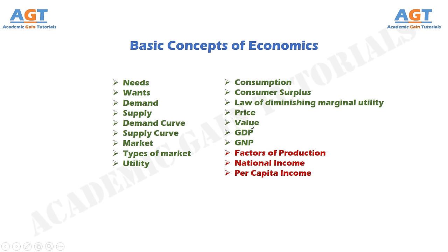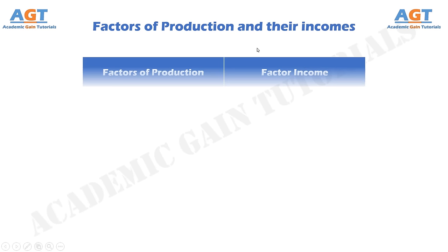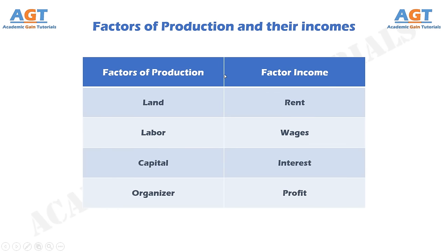There are three more topics left. Let's look into factors of production and their incomes. We can demonstrate factors of production and their incomes as in the following table. Land is a factor of production whose income is called rent. Labor is a factor of production whose income is called wages. Capital is a factor of production whose income is called interest. Organizer is a factor of production whose income is called profit.